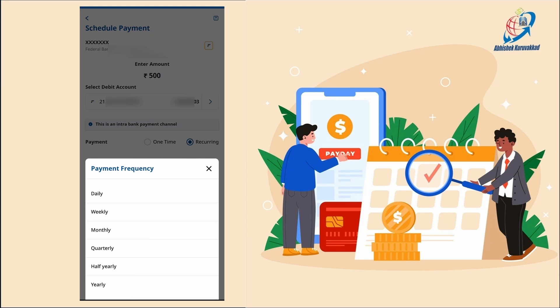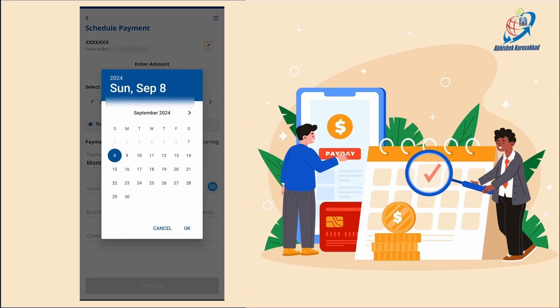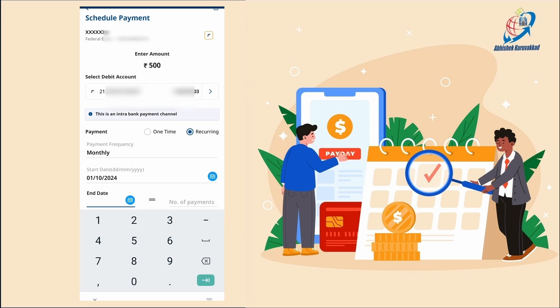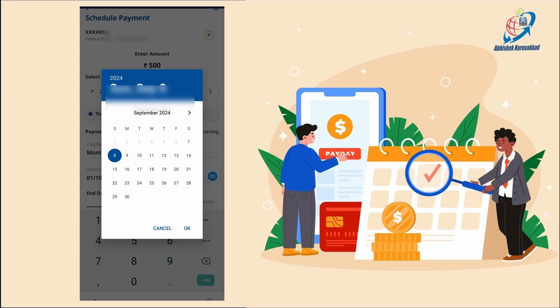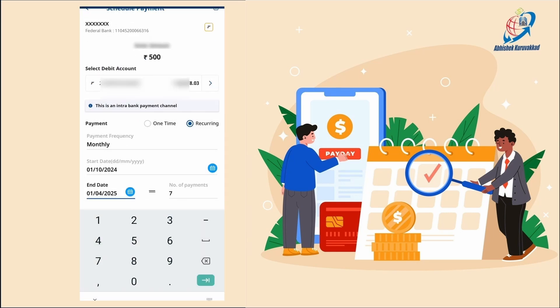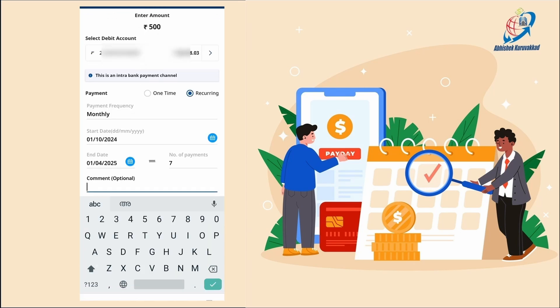We will enter the amount for the savings account and select a month. We will enter the debit and the transfer details. I will select the date, then enter the end date, the number of payments, and the date for the month.